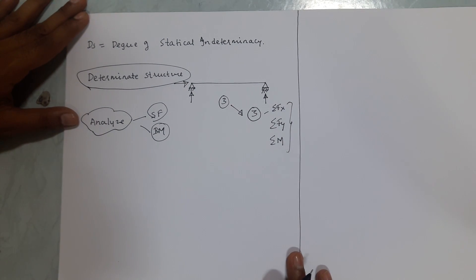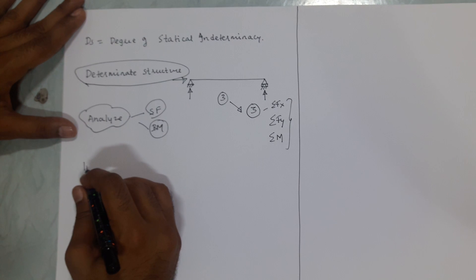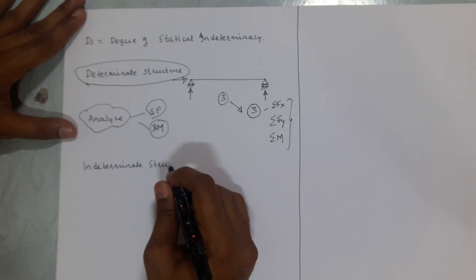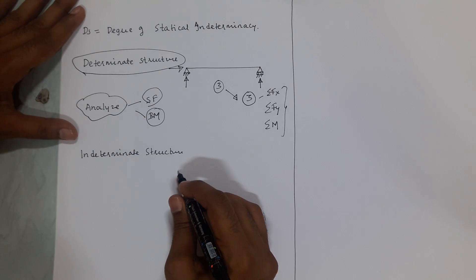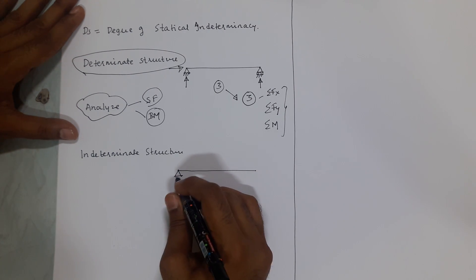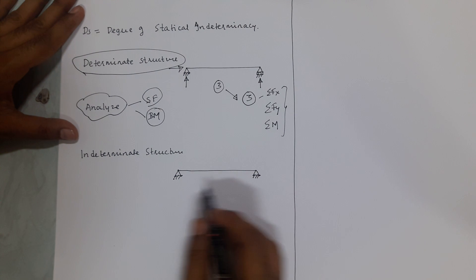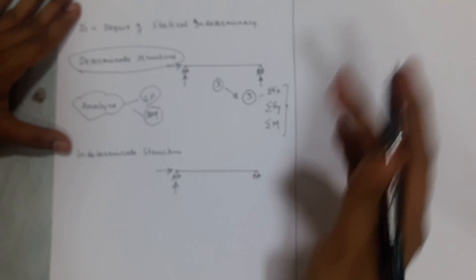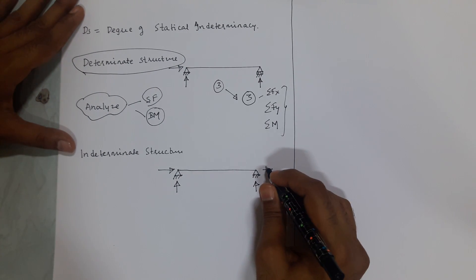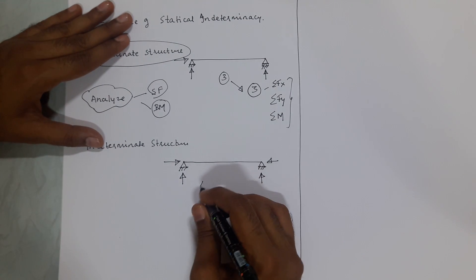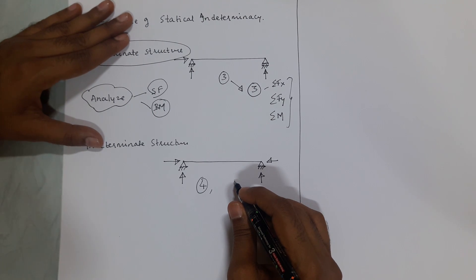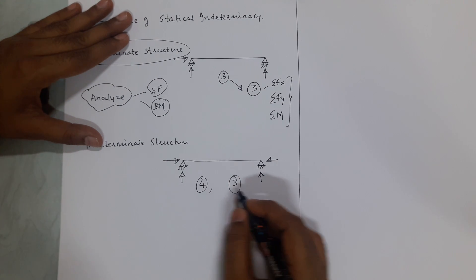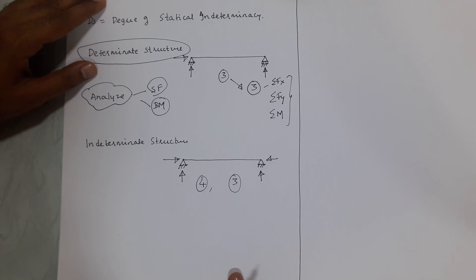Now we will talk about indeterminate structure. For a simple example, if we have two hinge supports at each end of a beam, we have two reactions at each support, so the total number of reactions is four. The equations of equilibrium are only three, so these four unknowns cannot be solved by using equations of equilibrium alone.